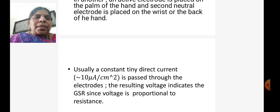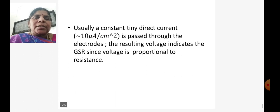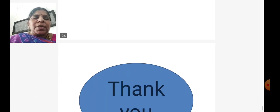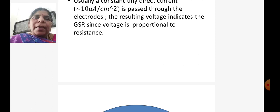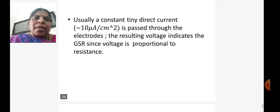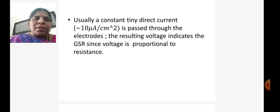Usually, a constant tiny DC current of the order of 10 microamps per centimeter squared is passed through the electrodes, which causes a resulting voltage that indicates the GSR. Since voltage is proportional to resistance, you can calculate the galvanic skin response. This GSR measurement is based on sweat gland activity. When the sweating is more, the resistance will be less.